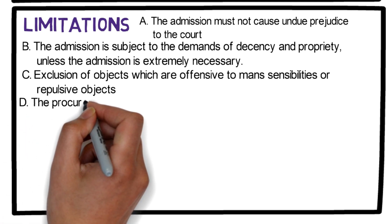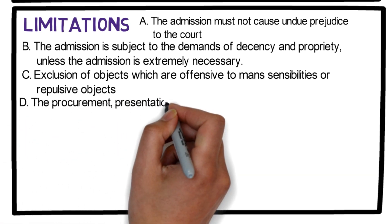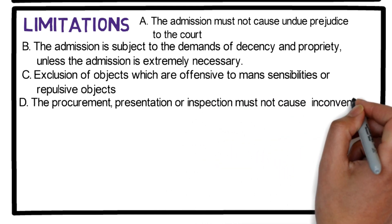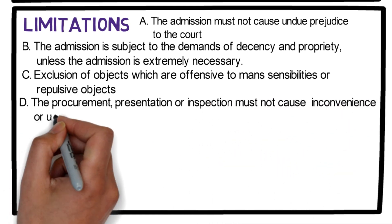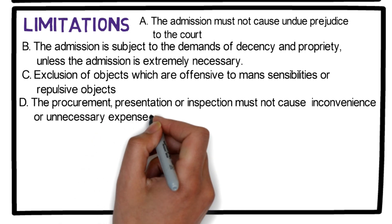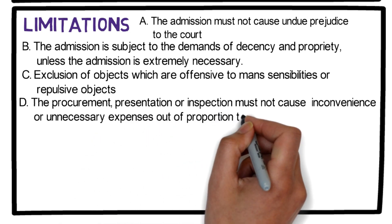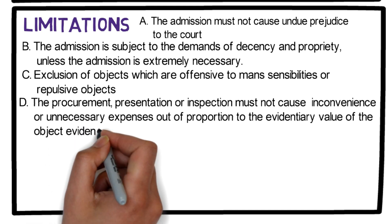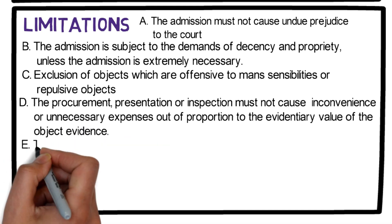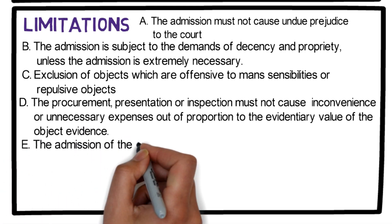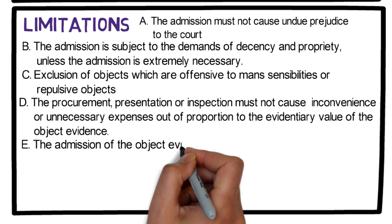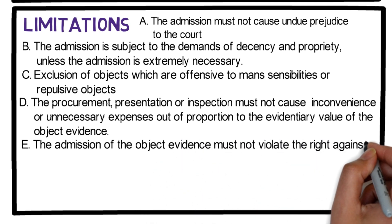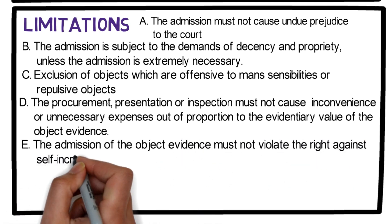For example, waste matters such as human excreta are not allowed to be presented to the court. Fourth limitation: the procurement, presentation, or inspection must not cause inconvenience or unnecessary expenses out of proportion to the evidentiary value of the object evidence.